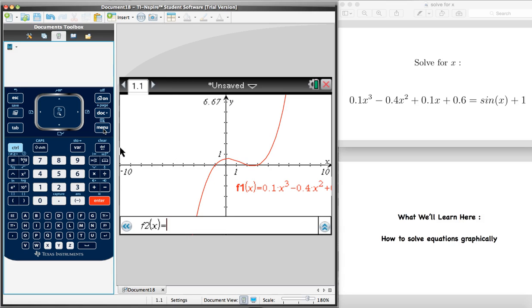And now we can see at the bottom of the screen, it's asking us to enter the second function, f2(x). And so just as similarly as what we did before, we're just going to copy the right hand side of the equation. So that would be sin(x) + 1. Enter.